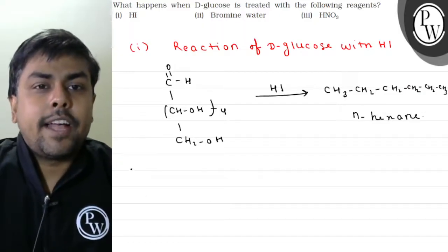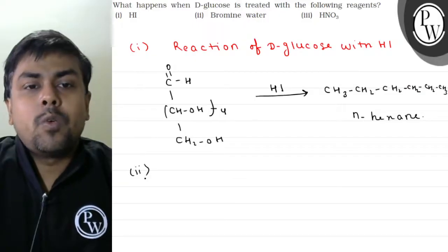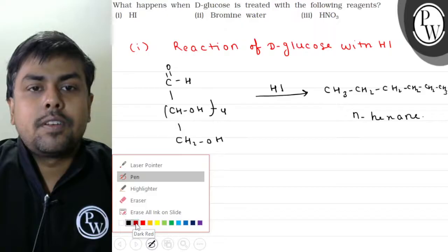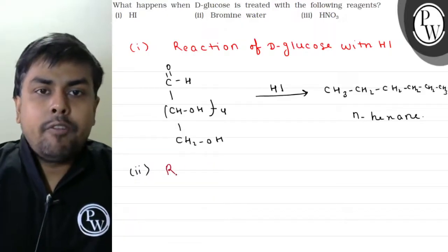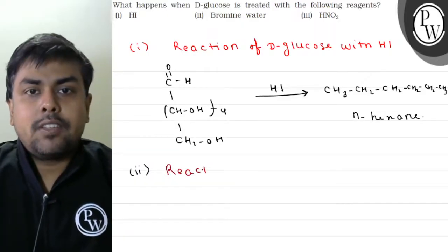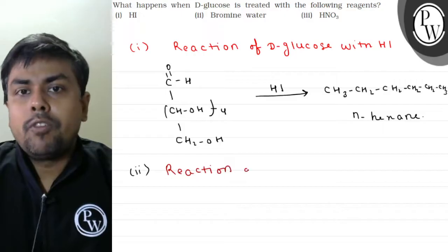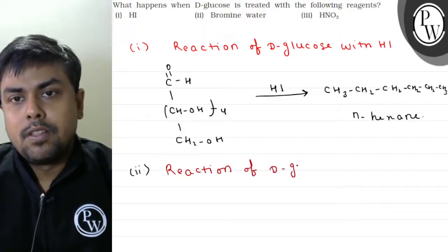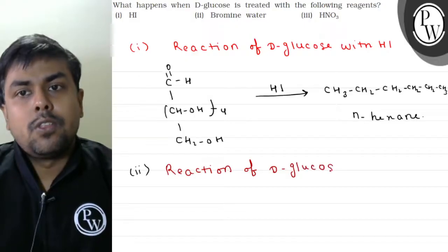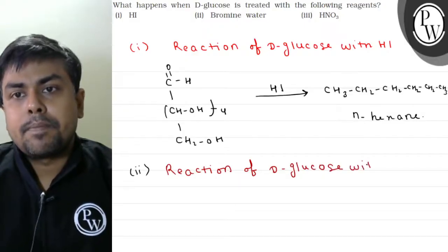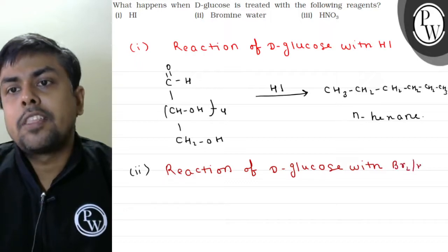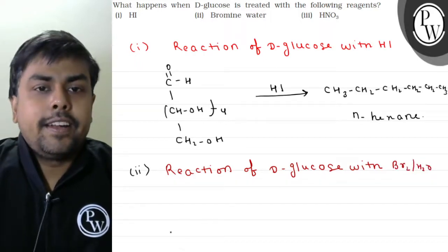Now I will talk about reaction 2. Reaction of D-glucose with Bromine Water, Br2/H2O. Let's see it.